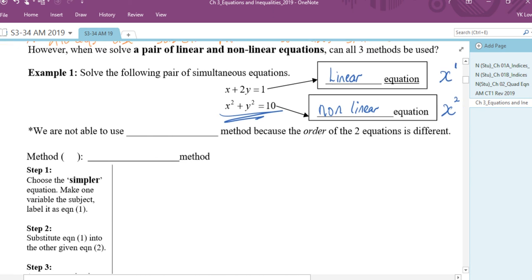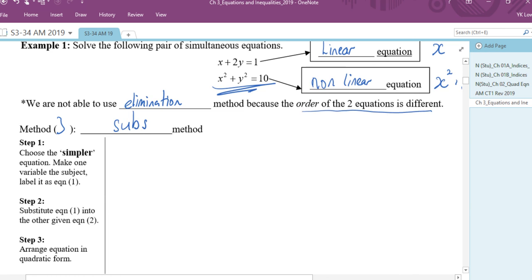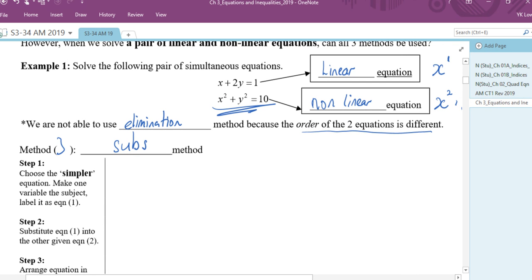We are unable to use what method because the order is different? Elimination. So I will use method 3, which is substitution. Now substitution means I want to look.